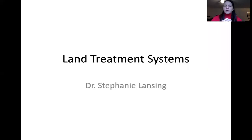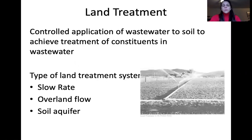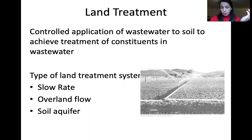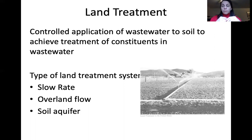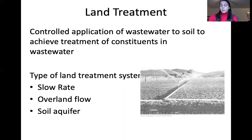Welcome to the land treatment systems lecture. Land treatment is the controlled application of wastewater to soil to achieve treatment of constituents in the wastewater. There are basically a few types of land treatment systems: slow rate, which we'll go through in quite detail, overland flow, and soil aquifer treatment. All of them use wastewater — the liquid waste from a waste stream, usually after at least primary or secondary treatment.